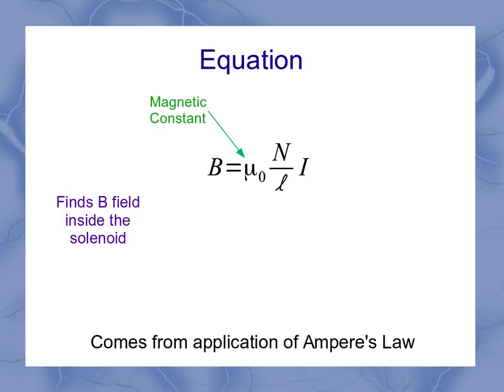Again, μ₀ is the magnetic constant. I is the current. N is the number of loops, and L is the length of the solenoid. Some texts will put this as a capital L, as just a regular letter L. Some of them will show it as lowercase, with more of a cursive L.